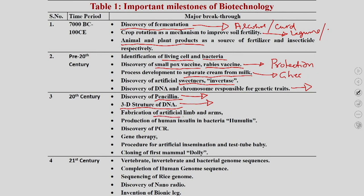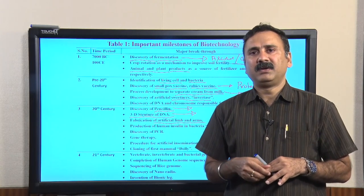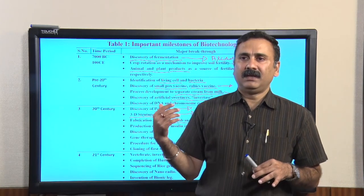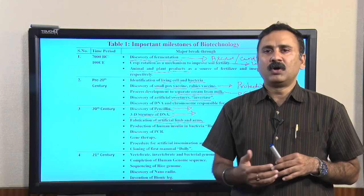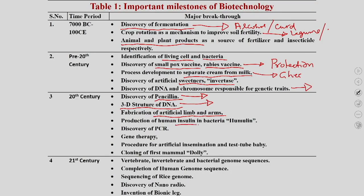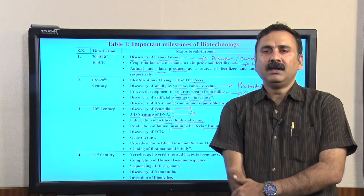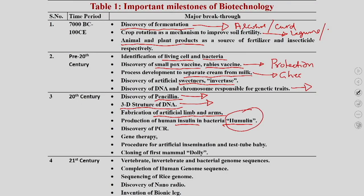They developed artificial limbs and arms, giving hope to those who had lost limbs — enabling them to walk or work independently. Then came insulin: before this, insulin was directly isolated from other animals such as pigs, but they started making insulin in bacteria, helping to take care of the disease known as diabetes.